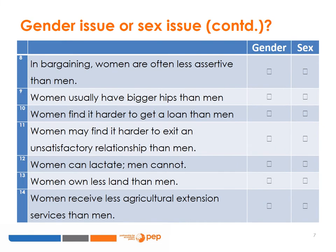In bargaining, women are often less assertive than men — is this a gender issue or a sex issue? Women usually have bigger hips than men — is this a gender issue or a sex issue? Women find it harder to get loans than men — is this a gender issue or a sex issue? Women find it harder to exit an unsatisfactory relationship than men — is this a gender issue or a sex issue? Women can lactate, men cannot — is this a gender issue or a sex issue?